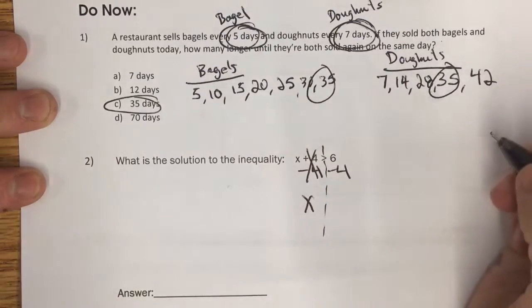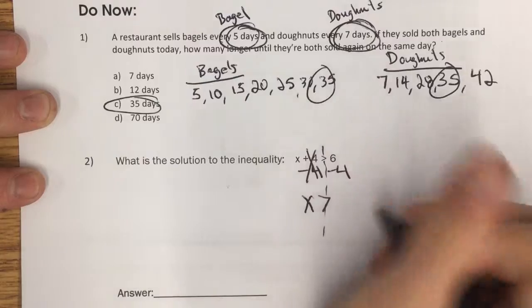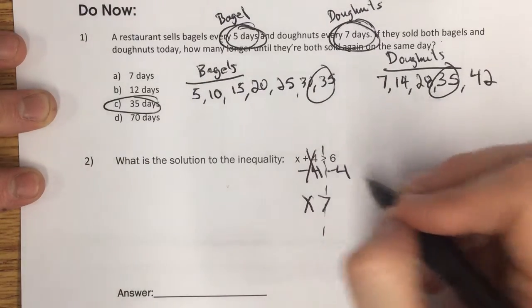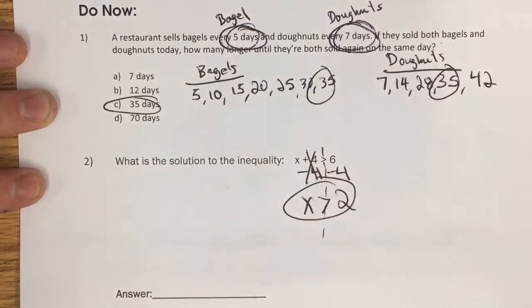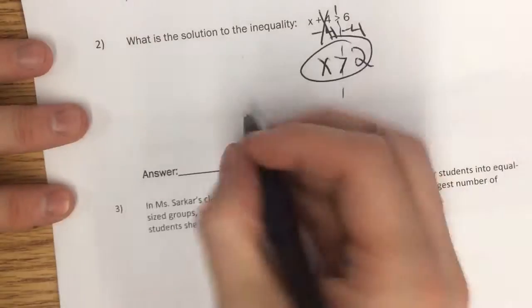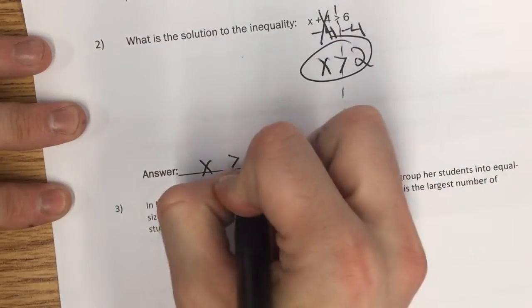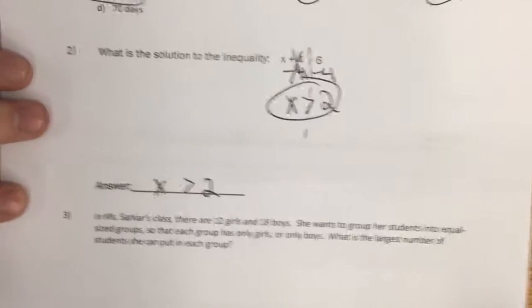X plus 4 minus 4, that becomes 0. So I just have x left over, is greater than 6 minus 4, which is 2. So there's our answer. X needs to be greater than 2. Make your corrections.